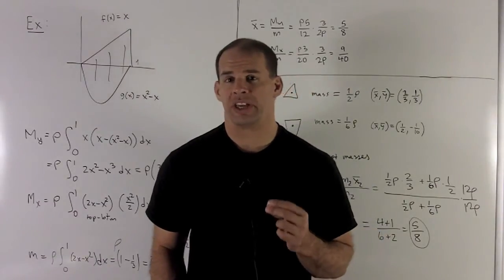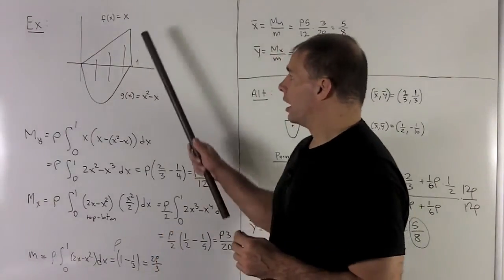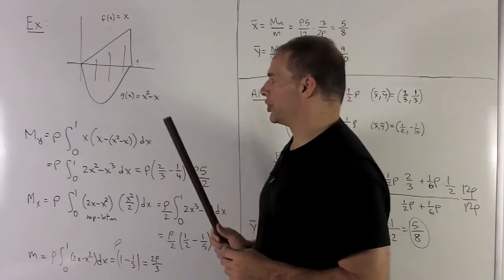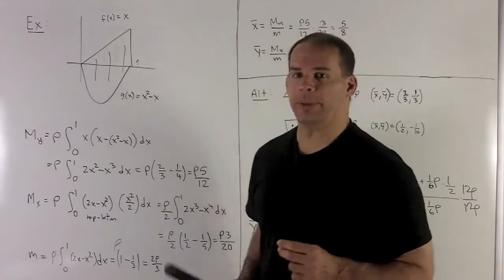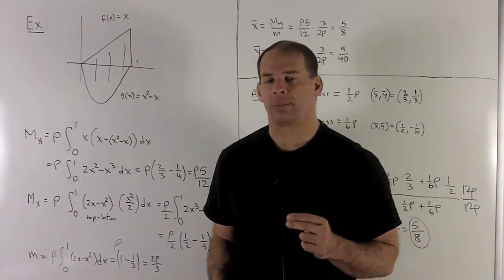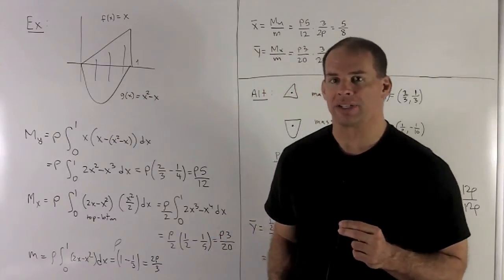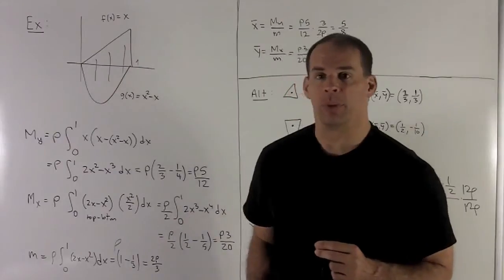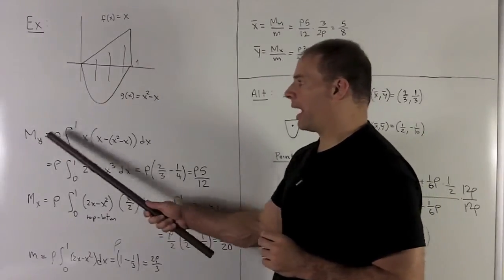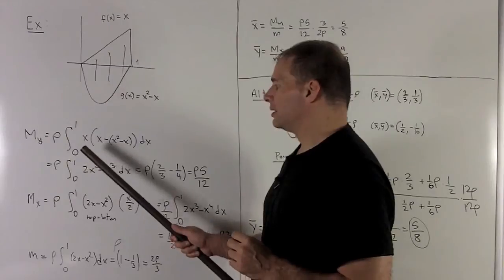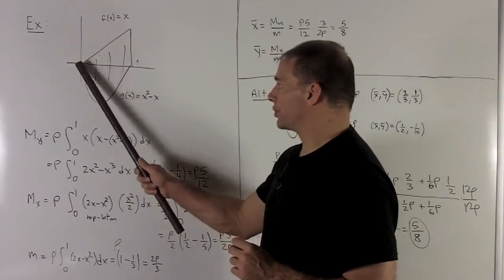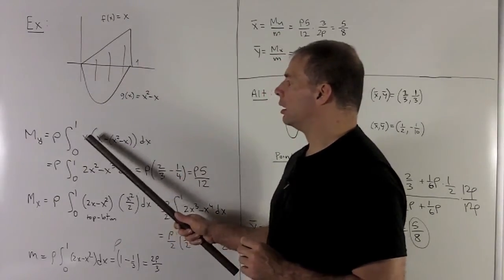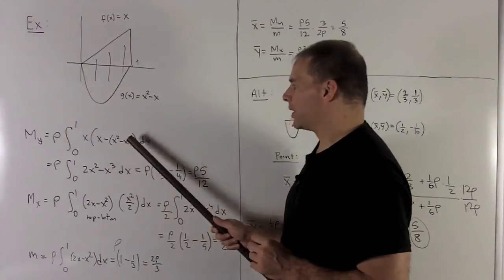Now let's look at the region given by fusing a triangle with a parabolic region. Our top function is going to be f of x equals x. Our bottom region is going to be x squared minus x. To get the center of mass, we're going to have to compute both the moments. The moment about y, formula says rho, definite integral over the region. So here it's going to go from 0 to 1 of x times top minus bottom.